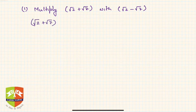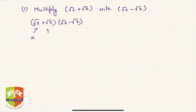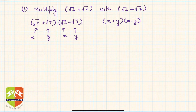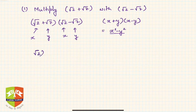We use the basics of algebra to multiply. Treating √2 as x and √7 as y, the expression becomes (x + y)(x − y), which by the algebraic identity equals x² − y². So we get (√2)² minus (√7)², which is 2 minus 7, giving us negative 5. We use rules of algebra to operate on compound surds.